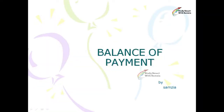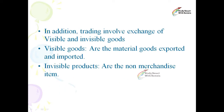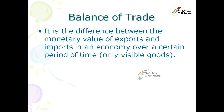Balance of payment: trade is the exchange of goods and services with other nations. Export refers to goods and services sold to other countries, while import refers to goods and services bought from other countries. Trading involves the exchange of visible and invisible goods. Visible goods are material goods exported and imported. Invisible products are non-merchandise items. Balance of trade is the difference between the monetary value of exports and imports in an economy over a certain period of time, covering only visible goods.